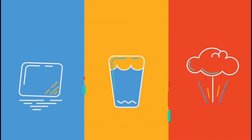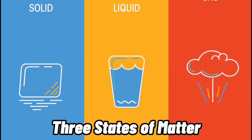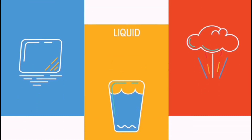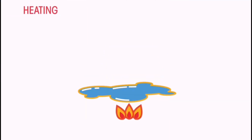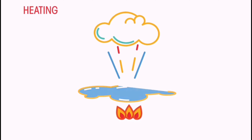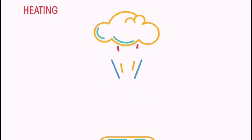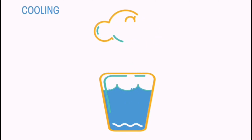On Earth, materials exist in one of three main states of matter: solid, liquid, or gas. Materials can change between these states. When a state change occurs, the substance's properties will also change. However, if the state change is reversed, the substance will recover the properties it had to begin with.